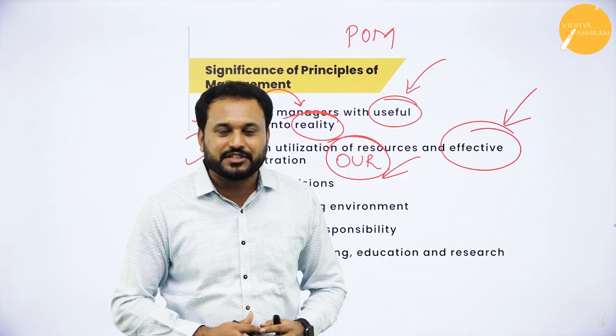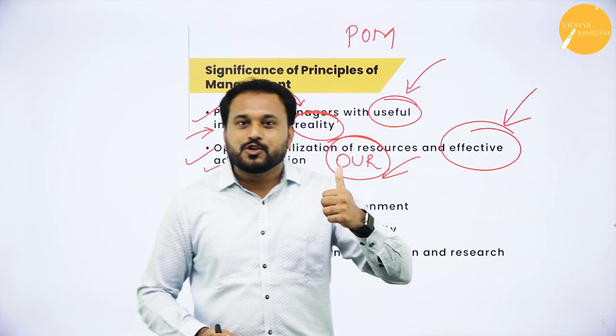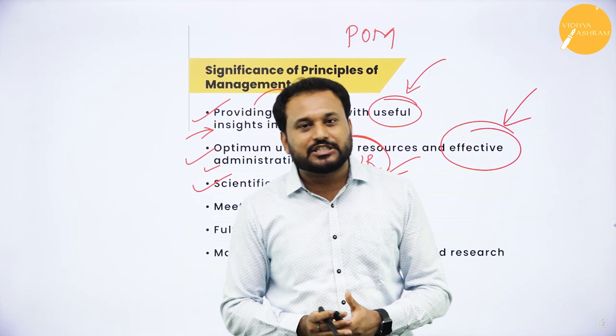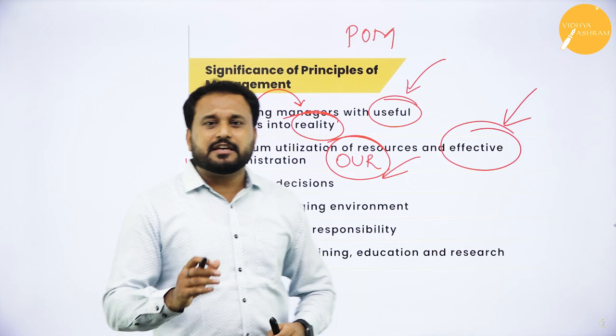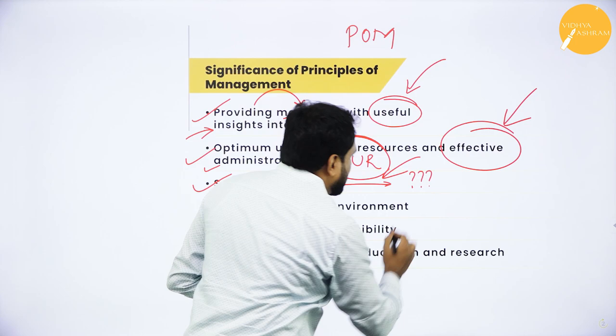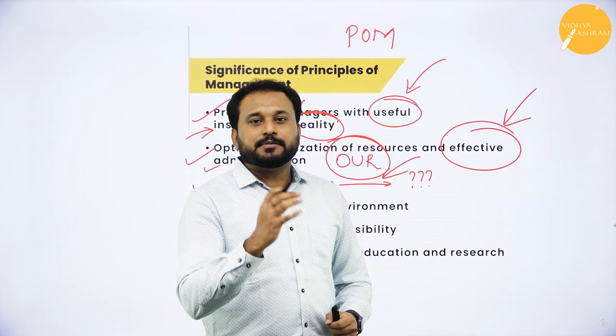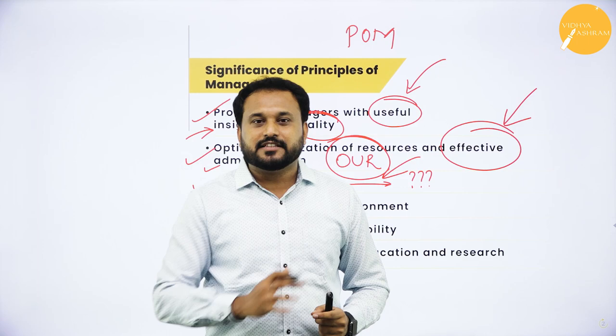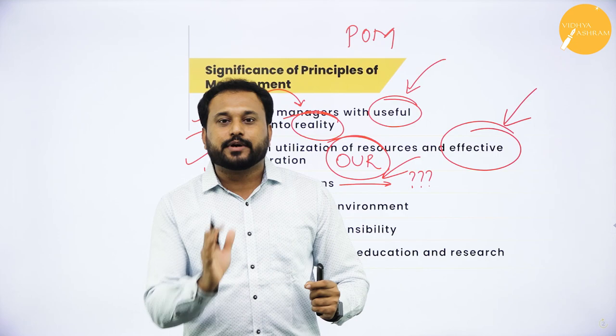The third significance is scientific decisions. Scientific decision means you are not using the rule of thumb. Henry Fayol's general principles are the rule of thumb, but F.W. Taylor beautifully said you should only go with science, not rule of thumb. In the 21st century, uncertainty is certain — it will happen and you are supposed to reduce it.